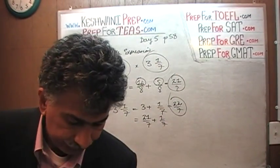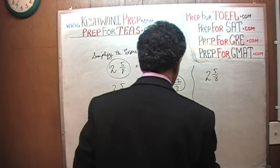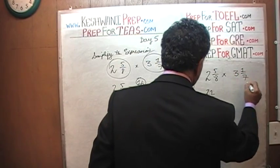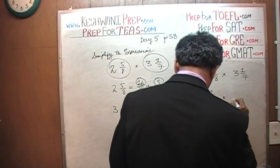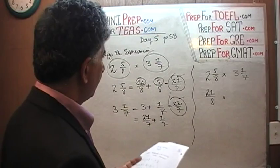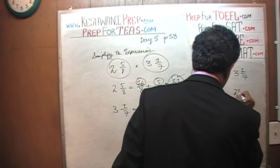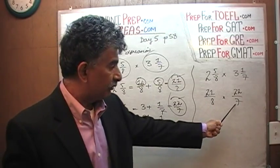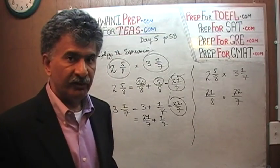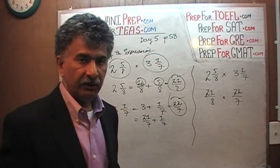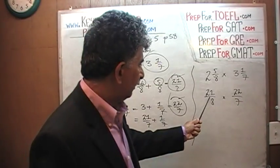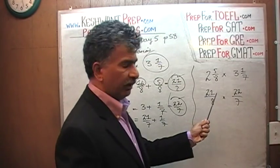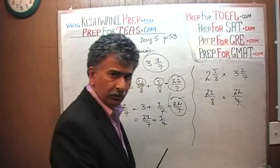So 2 and 5/8 is 21 over 8, times 3 and 1/7 which is 22 over 7. On the top we have 21 times 22, on the bottom we have 8 times 7. Before you waste time multiplying 21 by 22, ask yourself if anything can be reduced — the answer is almost always yes. We see that 21 is divisible by 7, and 7 is in the denominator. Divide top and bottom by 7: the 7 drops out and 21 becomes 3.